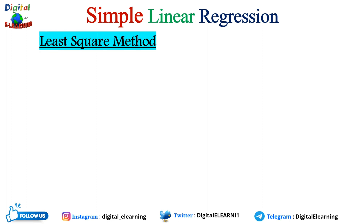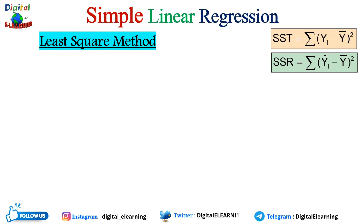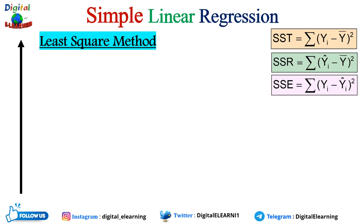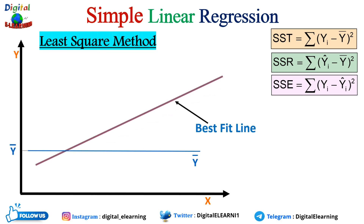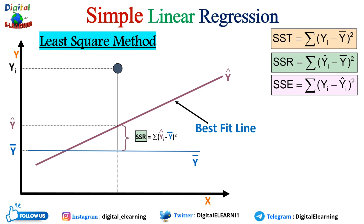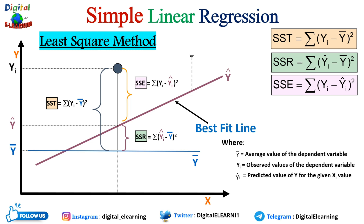Now let us understand the least square method graphically. We have SSR and SSE. We plot the data on x-axis and y-axis for the dependent and independent variables. We plot ȳ, we plot the best fit line from the regression equation, we plot ŷ, and we plot the individual data points. SSR is the regression sum of squares, SSE is the error sum of squares, and SST is the total sum of squares — the sum of explained and unexplained variations.